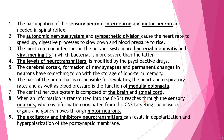Number eight: when information is transmitted into the CNS, it travels through sensory neurons. Information originating from the CNS and targeting the muscles, organs, and glands moves through motor neurons. Note that sensory and motor neurons have different functions. Leave any questions in the comments below.